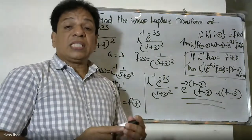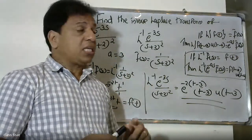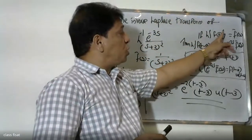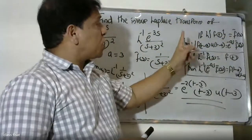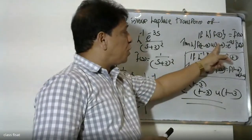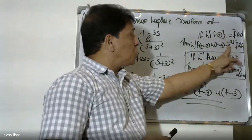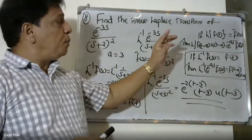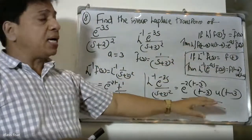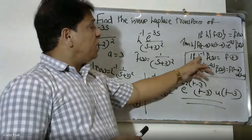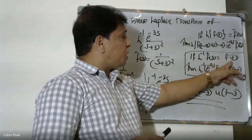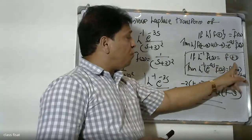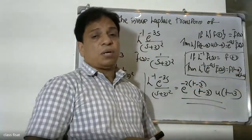Now we apply the second shifting property. The second shifting property: if L of f(t) equals F̄(s), then L of f(t minus a) into u(t minus a) equals e raised to minus as times F̄(s). The inverse form gives us: L inverse of e raised to minus as times F̄(s) equals f(t minus a) into u(t minus a).